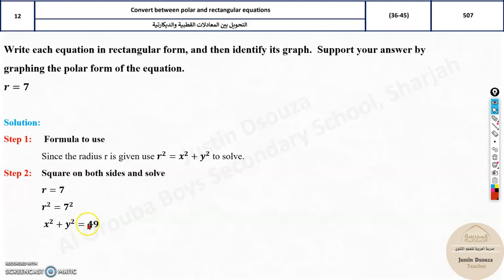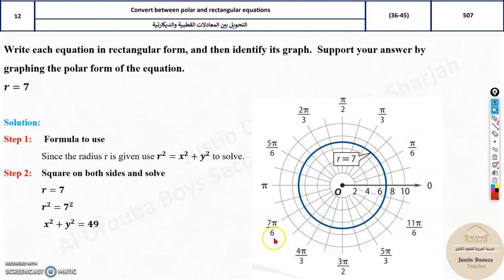X squared plus y squared is the equation for the circle with radius root of 49, that is 7. So this is a circle equation - draw a circle of radius 7. If the graphs are there, it's very easy, otherwise you should just substitute and convert.